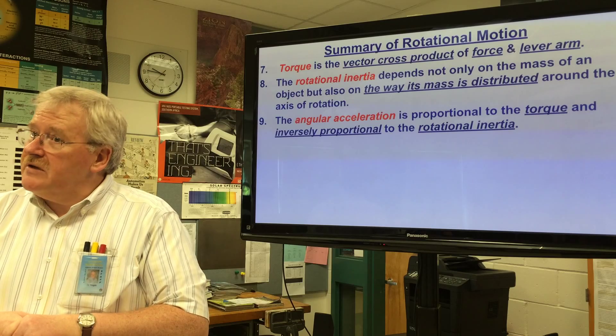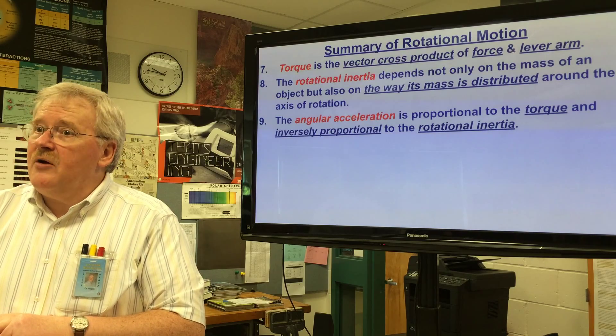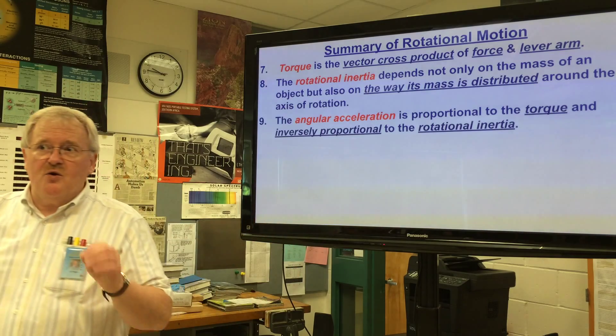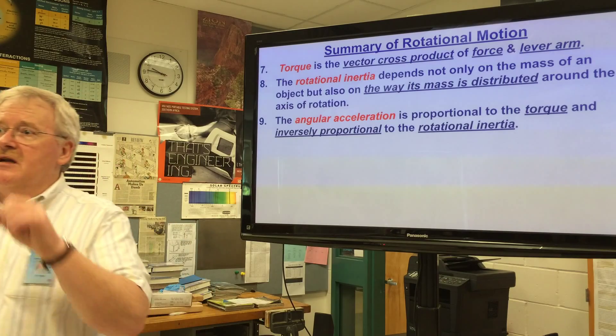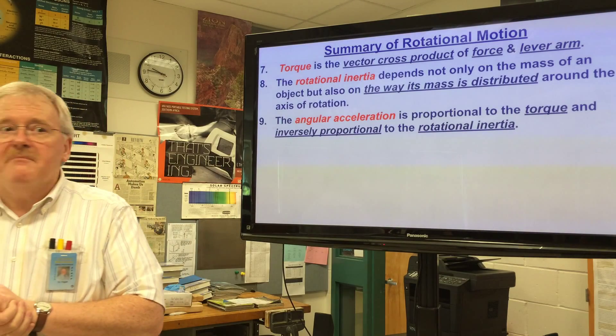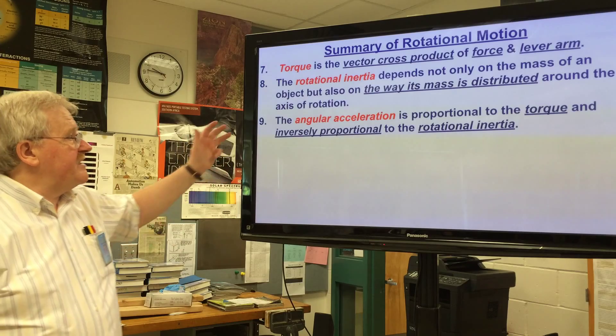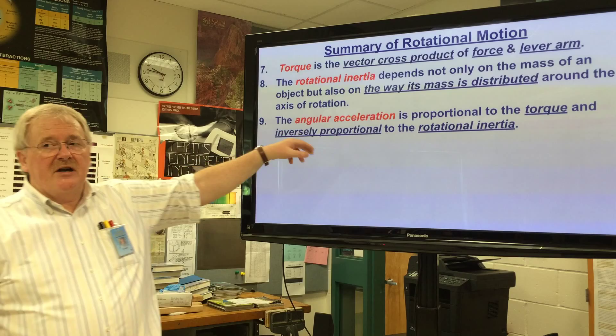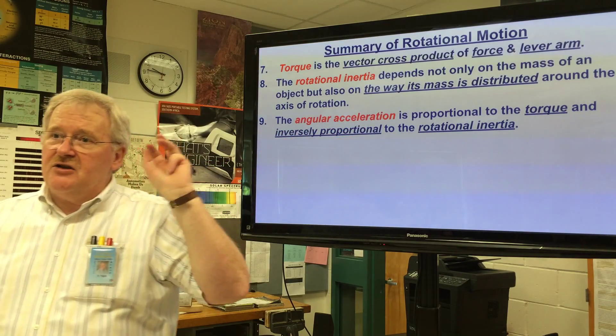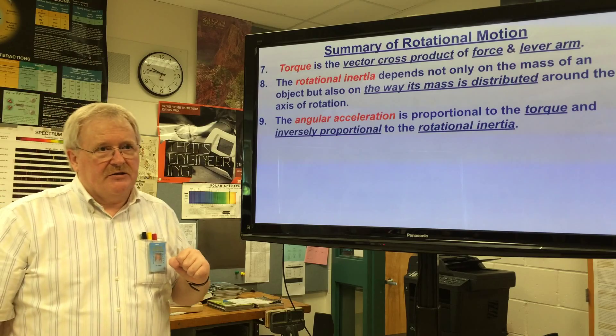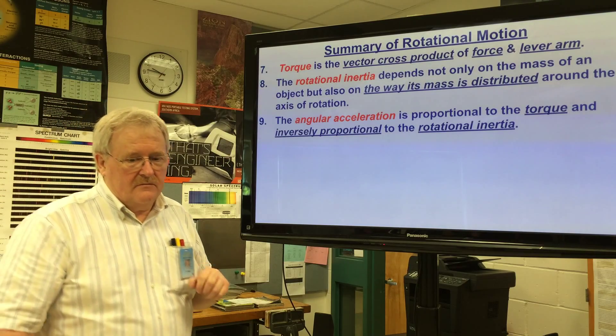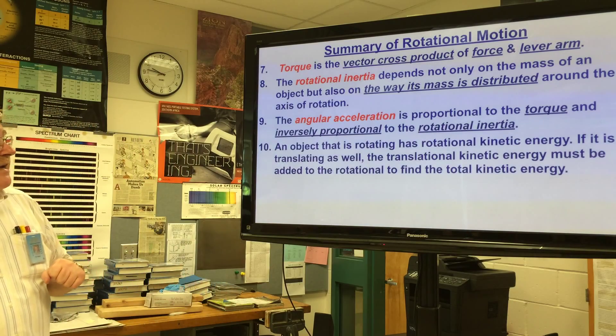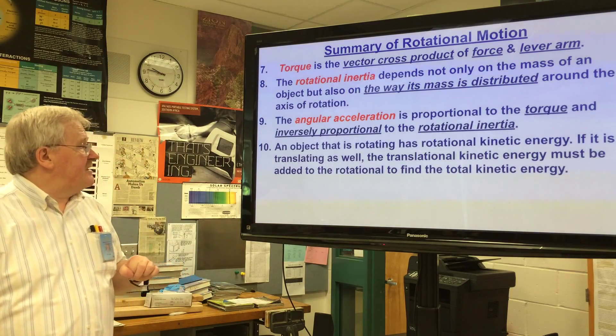Angular acceleration is proportional to the torque and inversely proportional to the rotational inertia. This is Newton's second law for rotation. That's how he would have written it. Remember that initially Newton's second law was acceleration equals the force divided by the mass. We're saying the same thing here - the angular acceleration α is equal to the net torque divided by the rotational inertia.